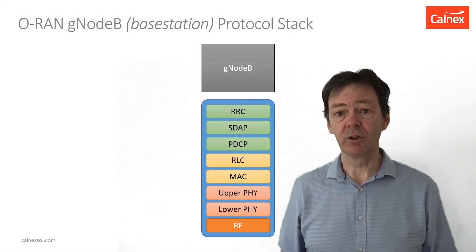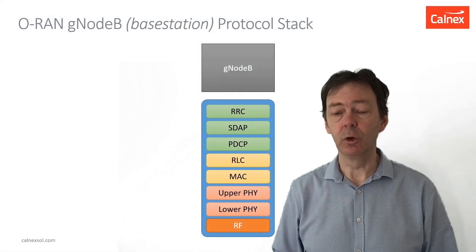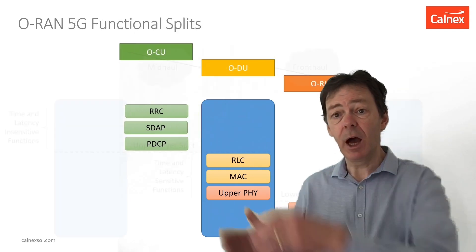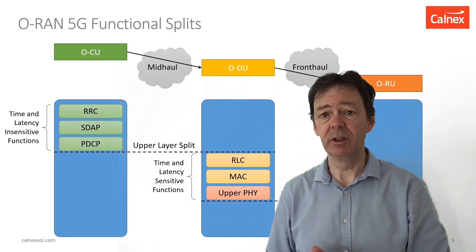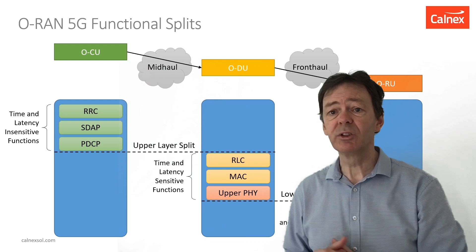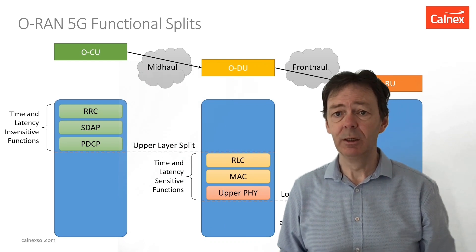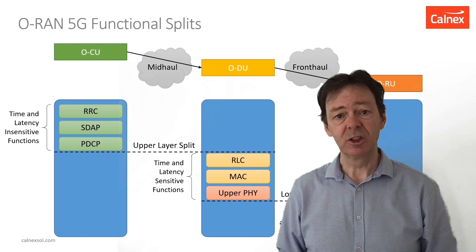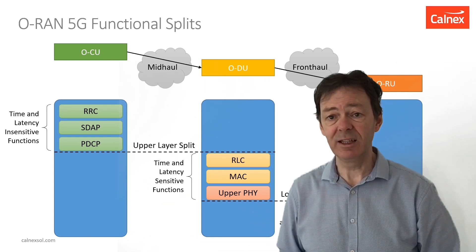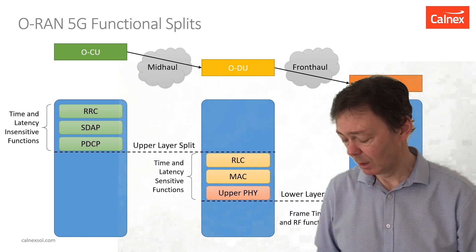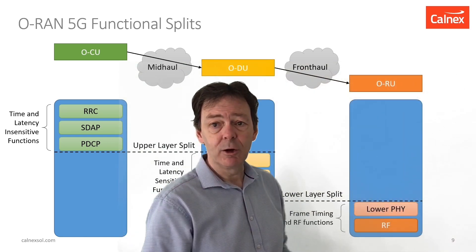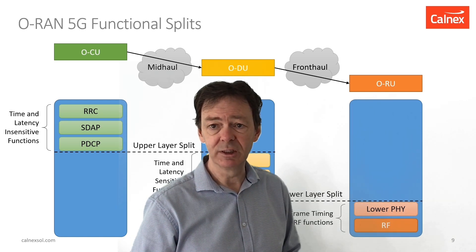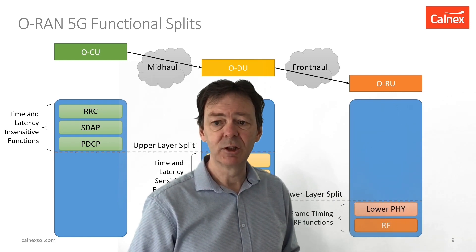This diagram shows the protocol stack for the 5G base station, or gNodeB. When this is split between the three different units, the upper layer protocols are handled in the centralised unit. The intermediate layer protocols are handled in the distributed unit — these tend to be the timing and latency sensitive protocols, such that they have to be deployed much closer to the RU for latency reasons. The RU itself handles the frame timing and the conversion into radio frequency, and is connected directly to the transmitter.